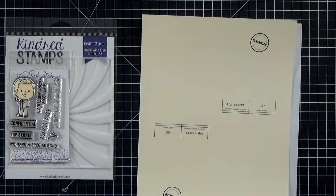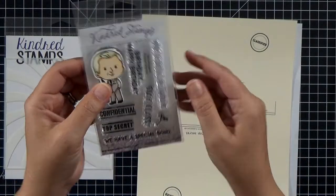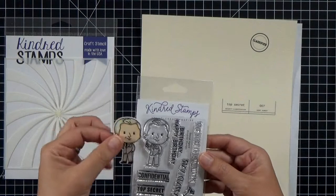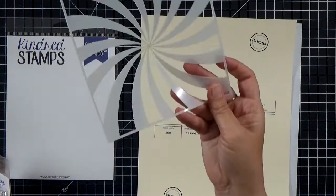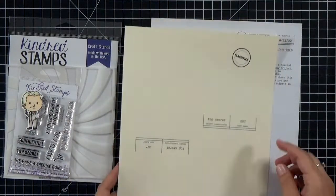So let's take a look at what I used. Again, that's the Secret Agent stamp set from Kindred Stamps. I've already gone ahead and stamped it, colored it, and cut it out with my Scan and Cut. And then I used this stencil also from Kindred Stamps. I believe it's retired. If it's not, I'll link to it, but you can use any kind of radiant stencil.